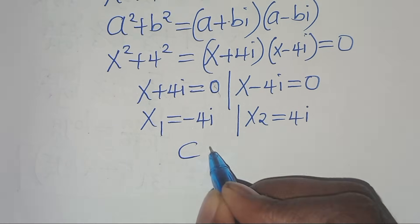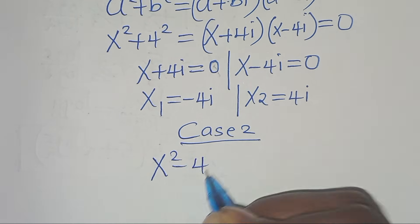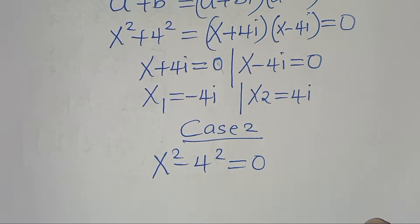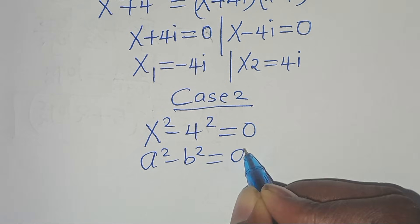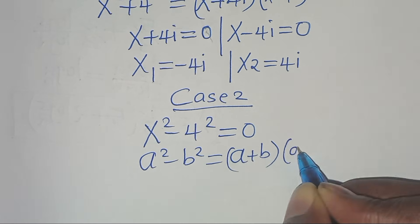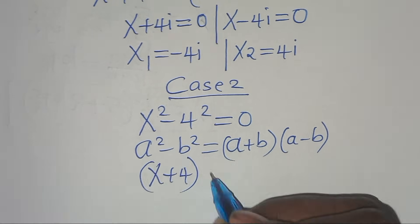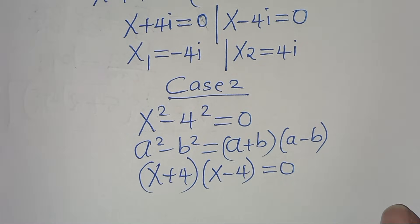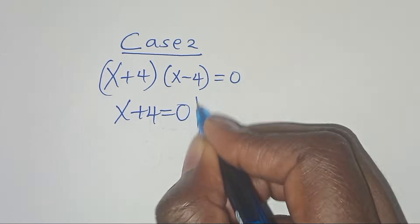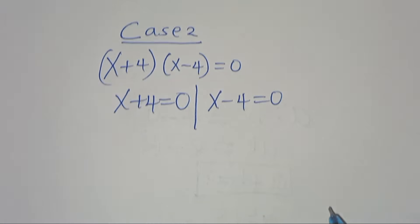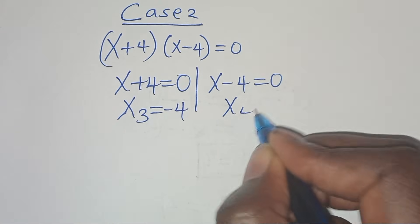Proceeding to Case 2: x² - 4² equals 0. This is in the form a² - b², which factors as (a+b)(a-b). So we have (x + 4)(x - 4) = 0, giving x + 4 = 0 and x - 4 = 0.